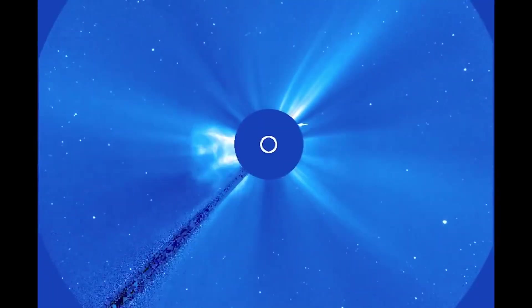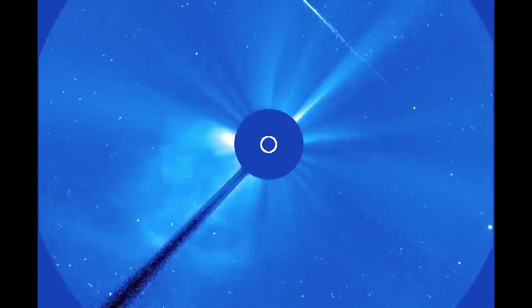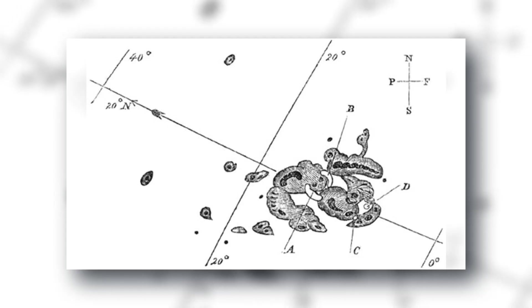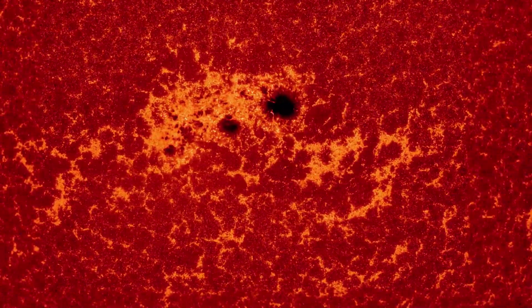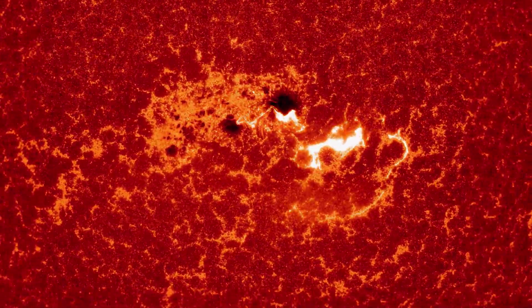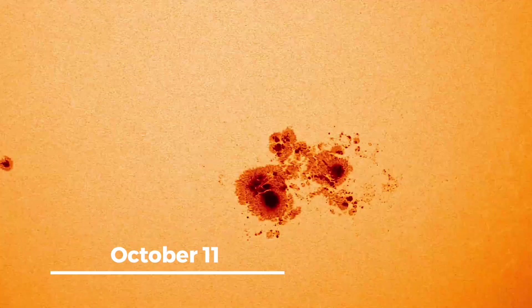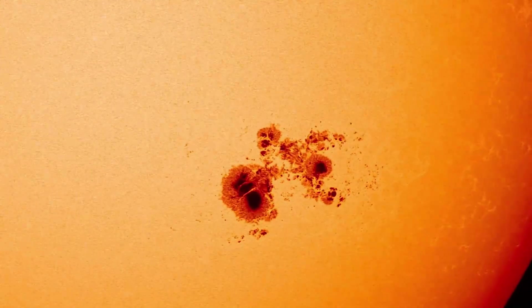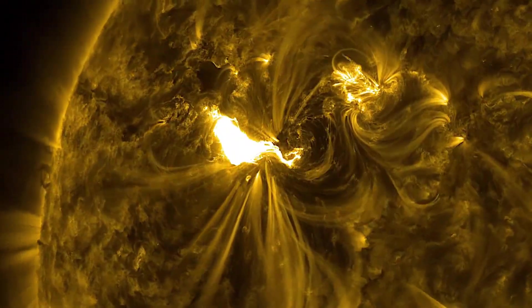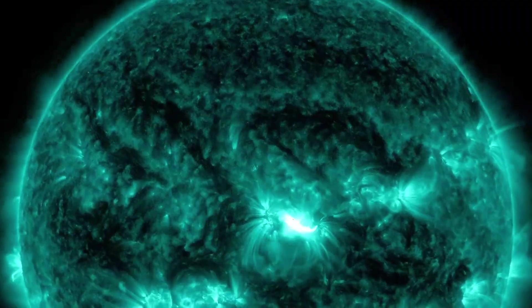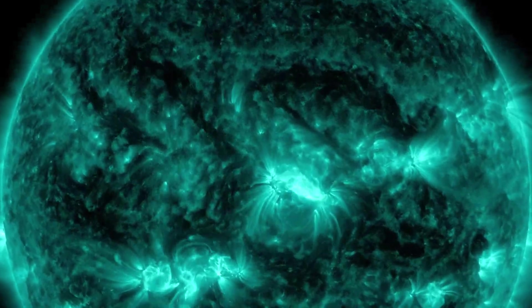However, the strongest solar flare ever documented in human history predates space-based telescopes, occurring in 1859. AR-3451 Sunspot has garnered attention and was monitored closely due to its potential to increase solar activity. On October 11th, observations revealed that the Sunspot exhibited a complex magnetic structure, with multiple magnetic poles displaying positive and negative charges near each other.